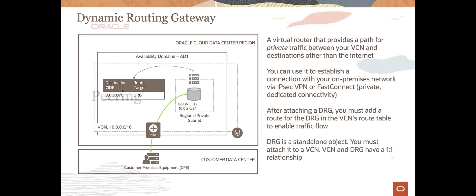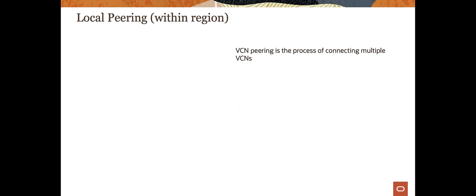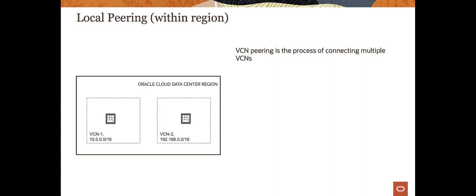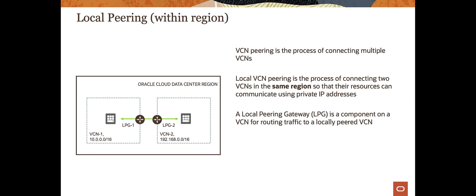You may ask: what if I need to connect multiple VCNs? That's called peering, and there are two types — local peering within a region, and remote peering across regions. Local peering is simply connecting multiple VCNs. If you have two different VCNs within the same region, you use what's called a local peering gateway — it's a component on the VCN, and you need one for each VCN. You create one on VCN1 and one on VCN2, enable traffic flow, and write route tables for both.